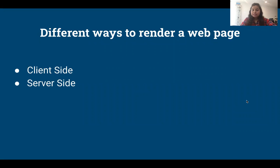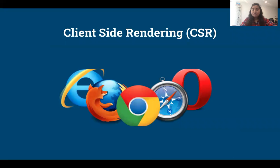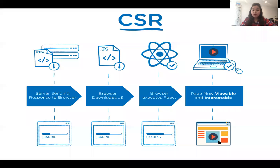As most of you know, there are two ways to render a web page: client-side and server-side. Let's start with client-side rendering. When the server sends a response to the browser in the form of HTML, it will just have the skeleton of the web page or bare minimum code. The browser then downloads the JavaScript to have the page in an interactable state and executes React or any other templating library you might be using. When all this is happening, you will be seeing a loading icon on your browser.